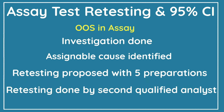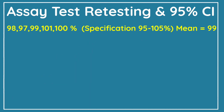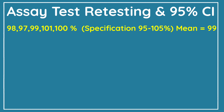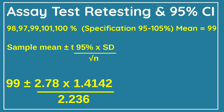Retesting was done by the second qualified analyst and we got five assay results: 98, 97, 99, 101, and 100%. The specification limit is 95 to 105%. Now we have to calculate and check whether all these results are meeting the 95% confidence interval limit or not. For that we need to calculate the 95% confidence interval limit using this formula.